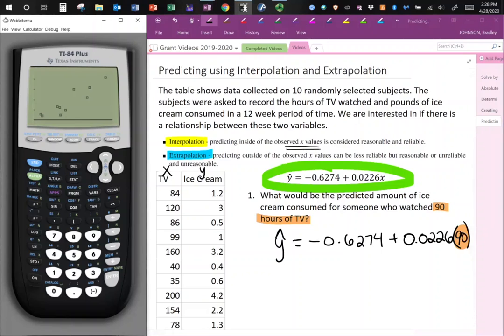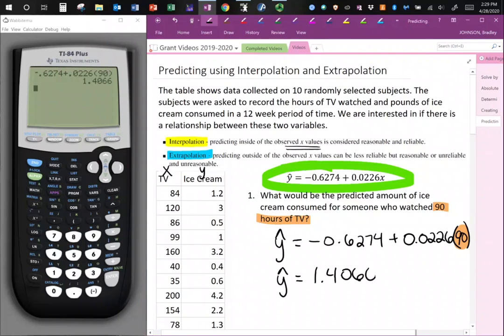So now I'll just go to my calculator, negative 0.6274 plus 0.0226 multiplied by 90. And you end up with a predicted value of 1.4066. Now this is a y value which relates to ice cream. So this would be pounds of ice cream for the units.